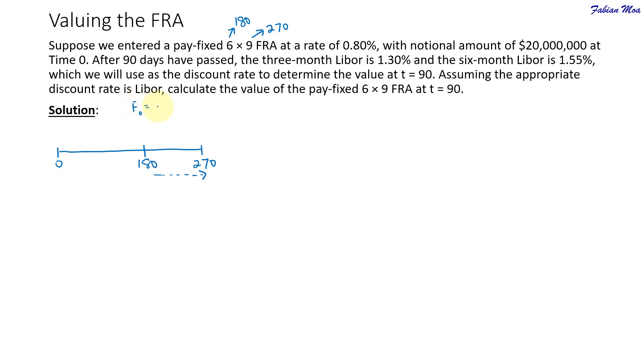At the initial point when you entered into the contract, the forward rate was 0.8%. You have entered into a pay-fixed position, which means it is a long position in the FRA. After 90 days have passed, we are trying to find out what is the value of the contract on day 90.